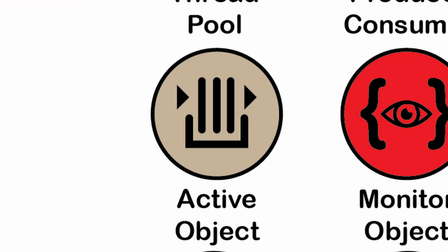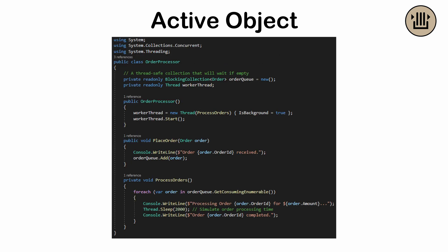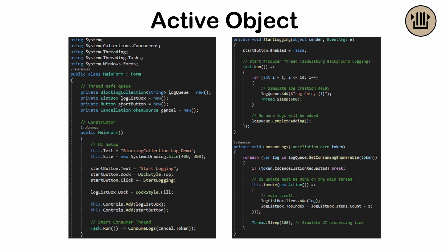The active object pattern — a means of introducing asynchronous task handling. Instead of doing work immediately, method calls are placed in a queue and executed one by one. This is useful in GUI applications, game engines, and other real-time simulations to avoid blocking the main thread.